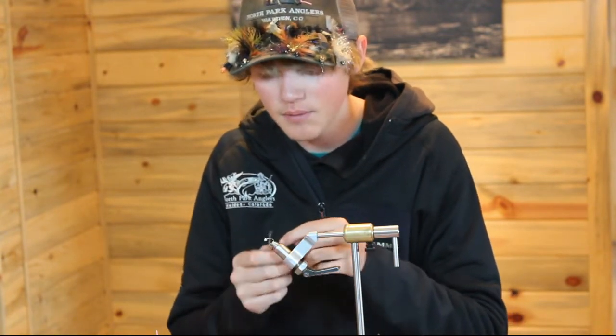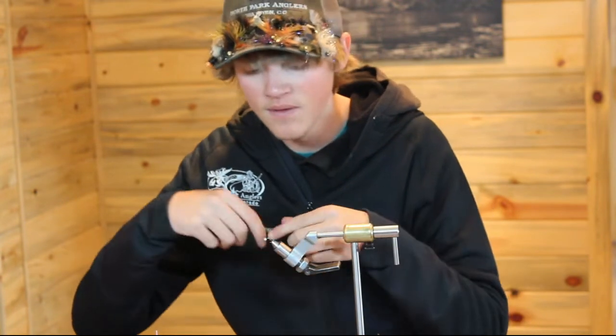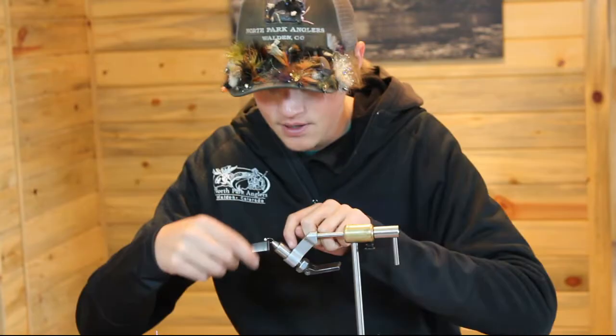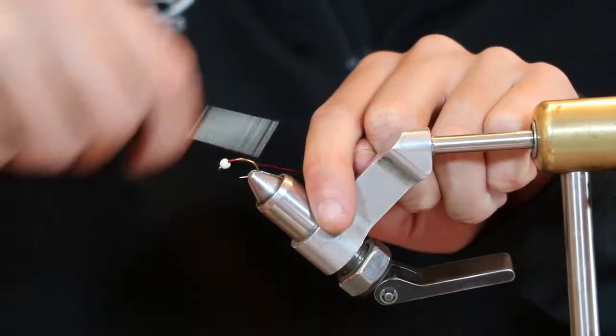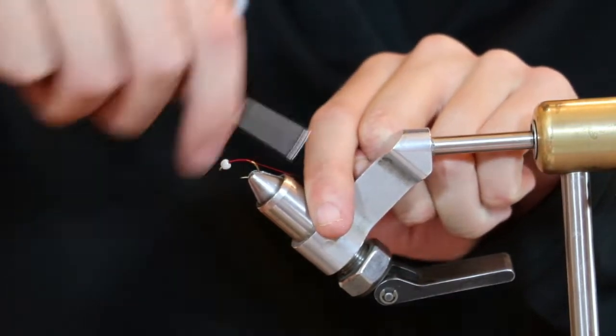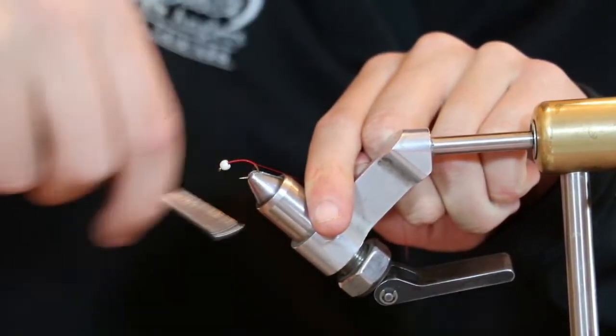You'll start with a size 10, but you could tie this anywhere from an 18 up to an 8. On there I've got a 1/8 white bead, and again you would just match that to the size hook that you're tying on.